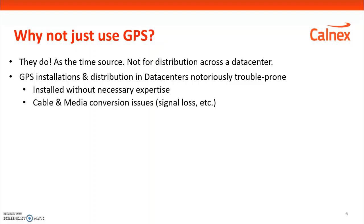So why not just use GPS? Data centers do in fact use GPS as a source of time. However, it is very difficult to distribute GPS throughout a data center. Getting a GPS signal in is not easy, and this then needs to be distributed throughout often massive data centers — this is difficult to do and very expensive. In general, data center operators have deployed GPS but have lots of issues with it, which is why NTP and PTP are much more reliable solutions for timing in data centers.